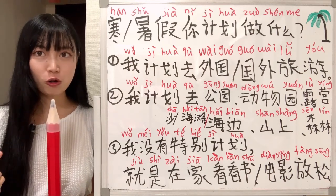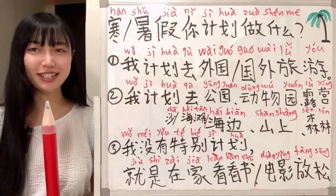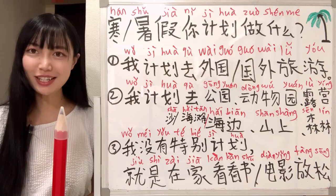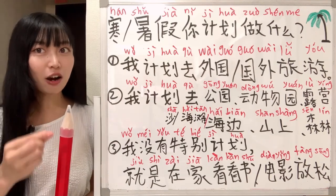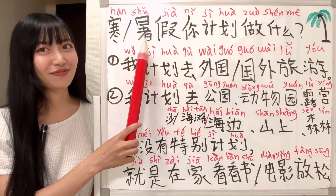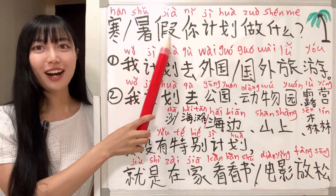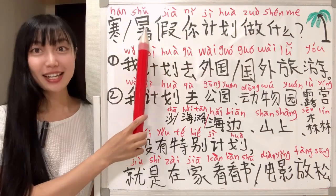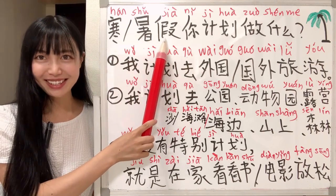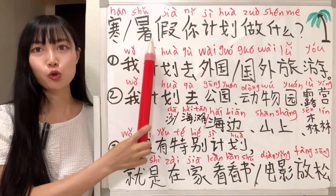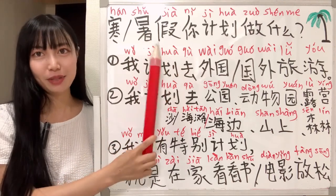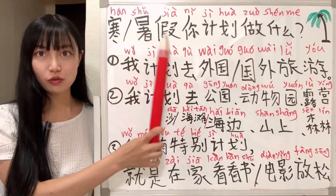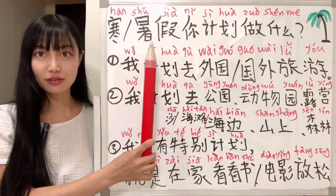First, we need to know how to say 'summer holiday' in Chinese. In English you say 'summer holiday', but in Chinese we don't follow that way. We say 'hot holidays'. 暑 means hot, 假 means holidays. So basically it means 'hot holidays'. In Chinese, 暑假 means summer holiday, because summer is hot. 暑 means hot, 假 means holiday.